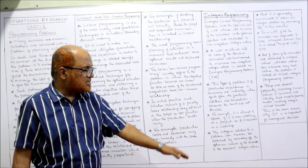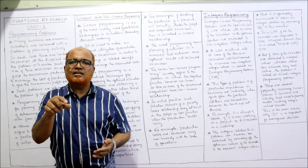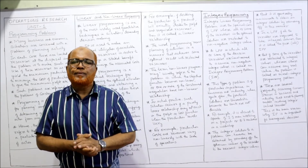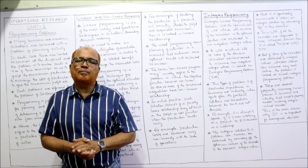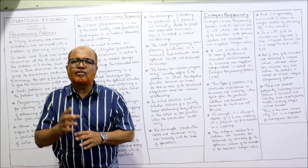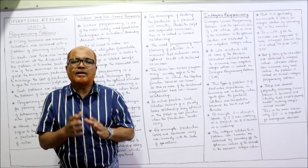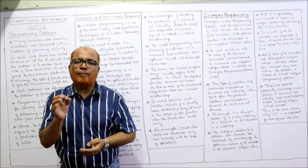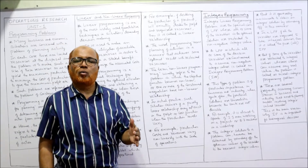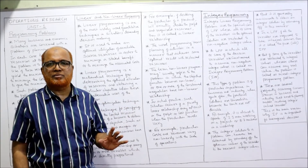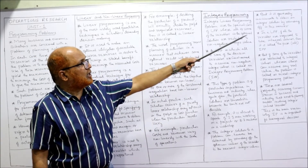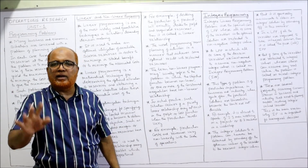One technique is: after getting the decision variable values, if they are in fraction, round off to the next integer value. For example, if the number of men calculated is 9.8 or 9.9, we round off to 10. However, this type of rounding off will not give the complete optimal solution because we are rounding off randomly. We need a technique to get an accurate solution. It is generally inaccurate to obtain integer values simply by rounding off.